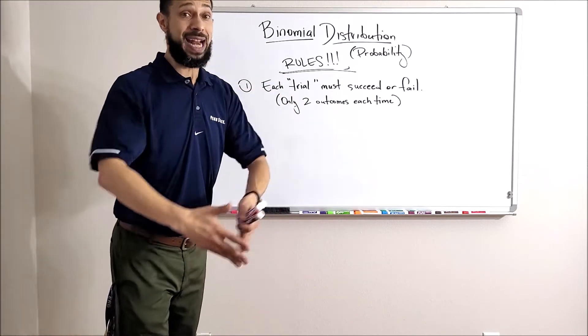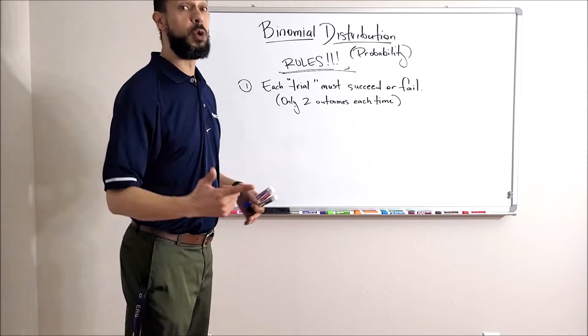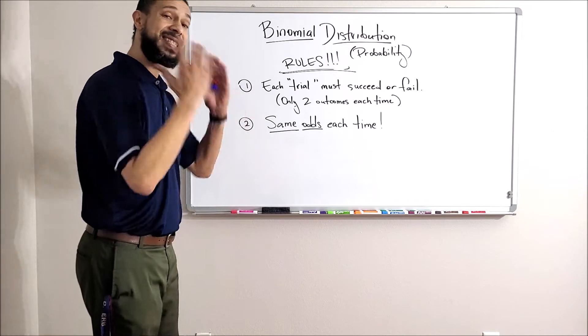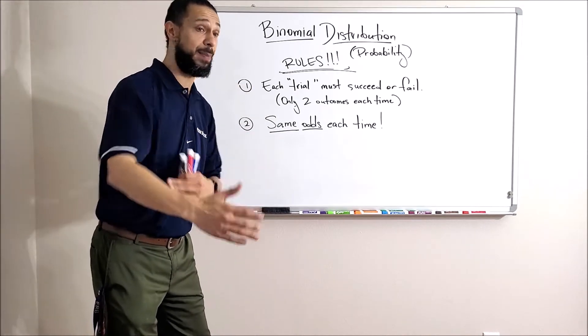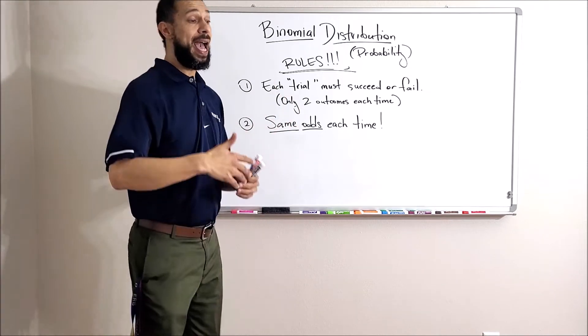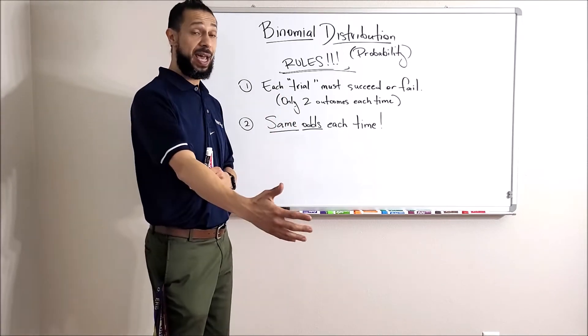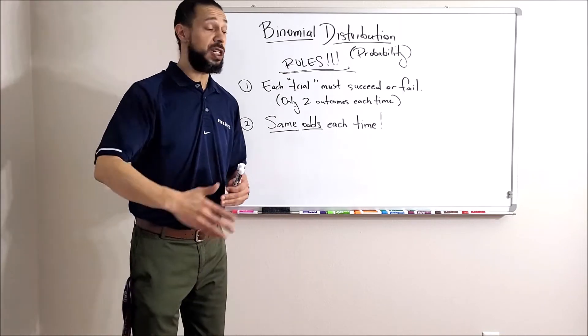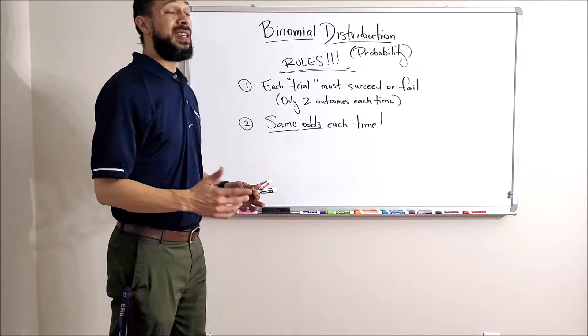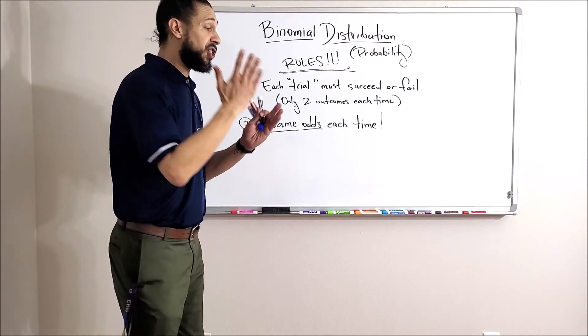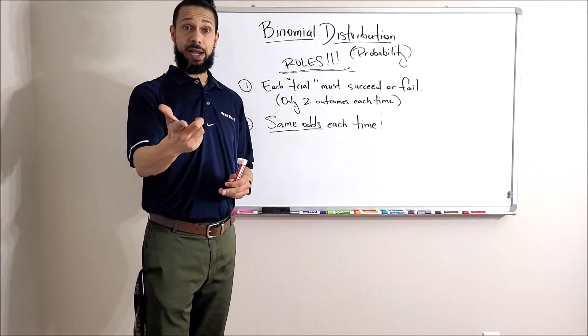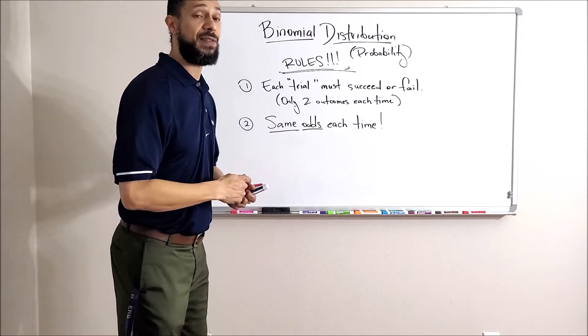Rule number two: every time you do the thing, it has to be the same probability of success each time. Same odds each time. Every time I flip that coin, there's a 50-50 chance it's going to be heads or tails. Every time I have a baby, there's a 50-50 chance it's going to be a boy or a girl. It doesn't have to be 50-50, it just has to be the same odds every time.